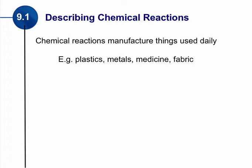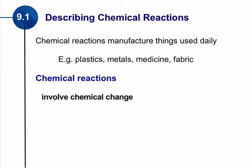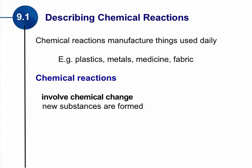When we are describing a chemical reaction, it's important to know what a chemical reaction really is — it is a chemical change. We are taking two or more elements, combining them together, and getting a chemical change. The chemical change results in new substances. We get something new.